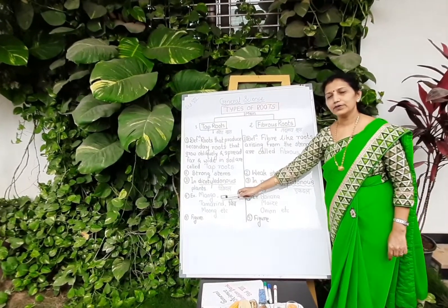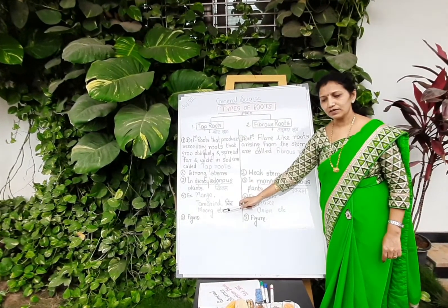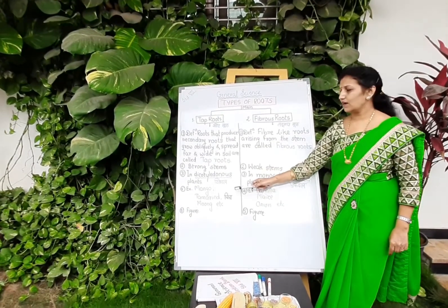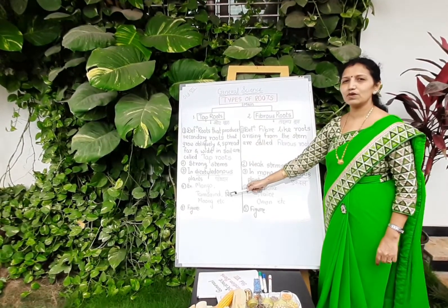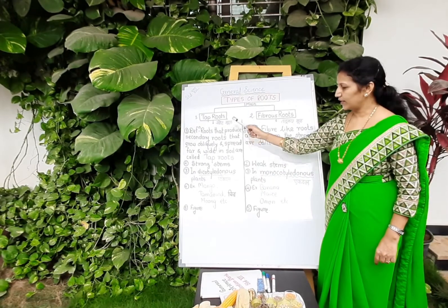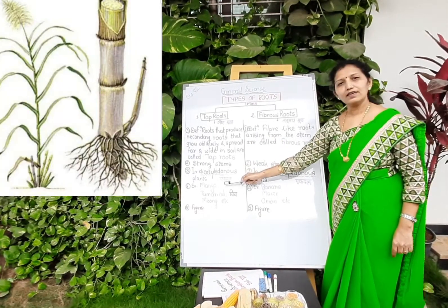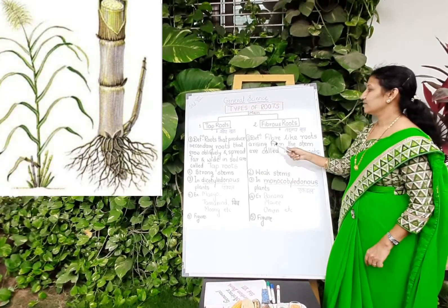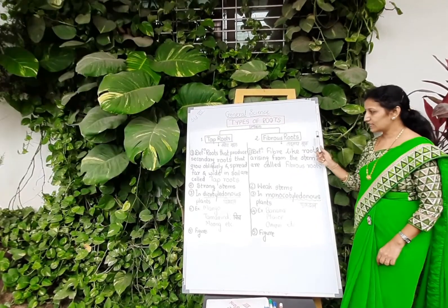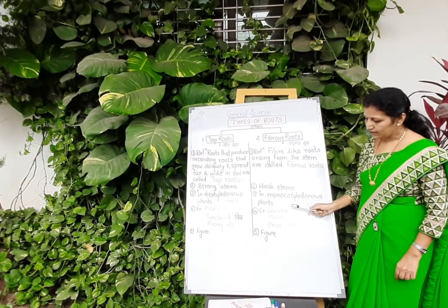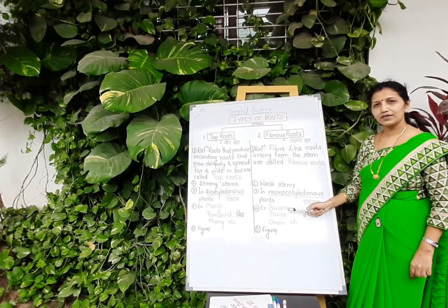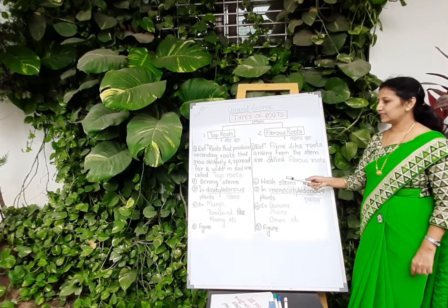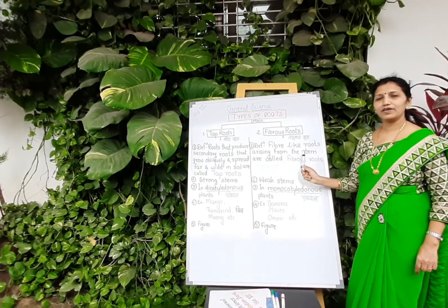Mango, tamarind, moong, masood, gram, and groundnut — all these are examples of tap root plants and dicotyledonous plants. Whereas plants having fibrous roots are banana, maize, onion, and garlic — these are the examples of fibrous roots.